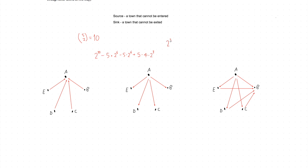Now compute the final answer. Total bad configurations = 5 × 2^6 + 5 × 2^6 − 5 × 4 × 2^3. Factoring out 2^3: 2^3 × (2^7 − 40 − 40 + 20). Wait—let's compute directly: 5 × 64 + 5 × 64 − 5 × 4 × 8 = 320 + 320 − 160 = 480. So valid configurations = 2^10 − 480 = 1024 − 480 = 544. The final answer is 544.